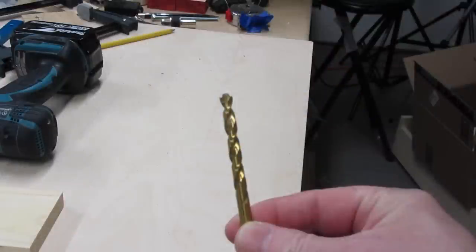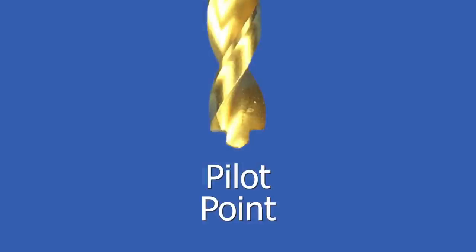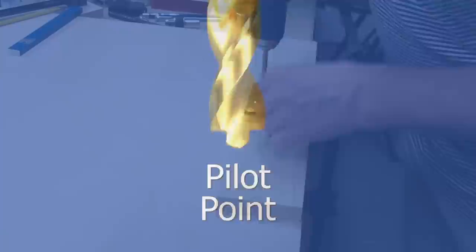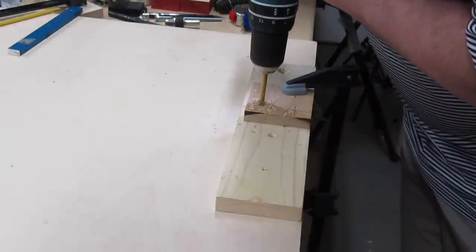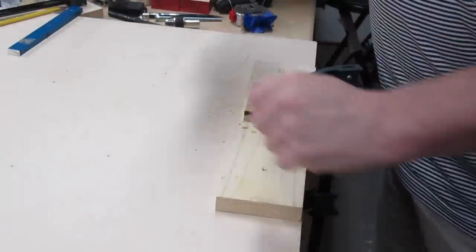DeWalt's Pilot Point Bit is a modification to the standard Multipurpose Bit. It has a small extended portion here which acts sort of like it's drilling a pilot hole. Hence the name Pilot Point. This point helps keep the bit from skating at the start, which means you may not have to put a mark in the wood or drill a pilot hole.